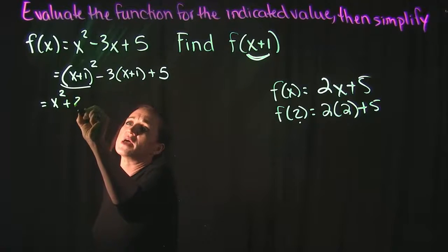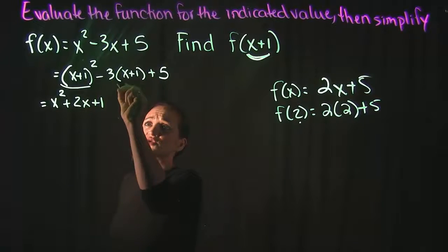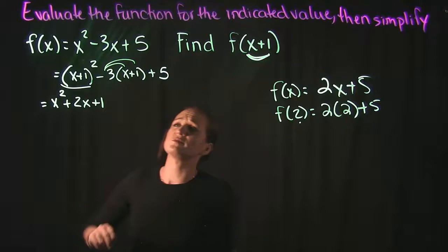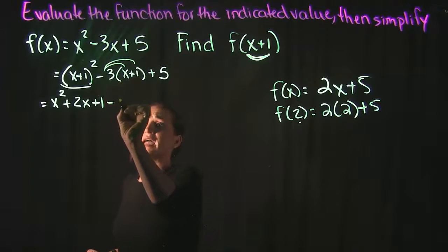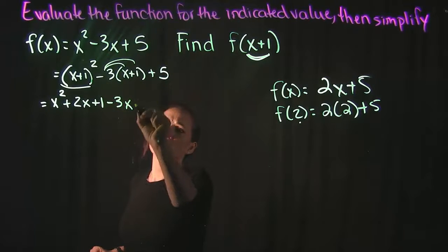Then we're going to have this minus 3 times x plus 1, which means that we need to distribute. That negative 3 times x gives us negative 3x, negative 3 times 1 gives us a negative 3.